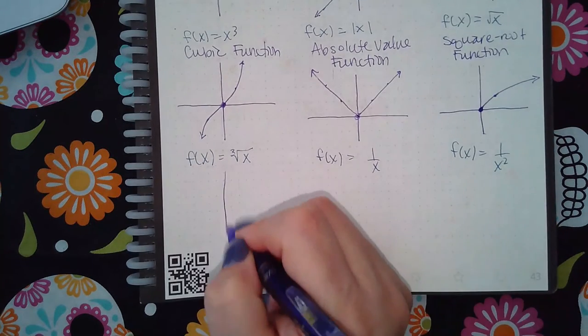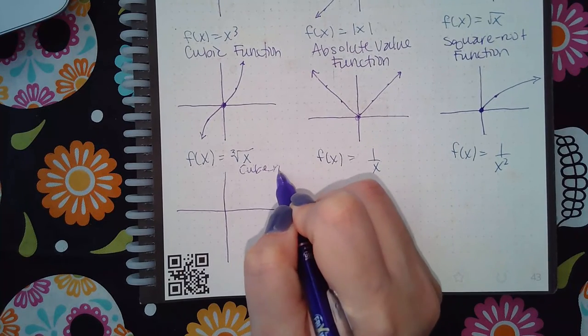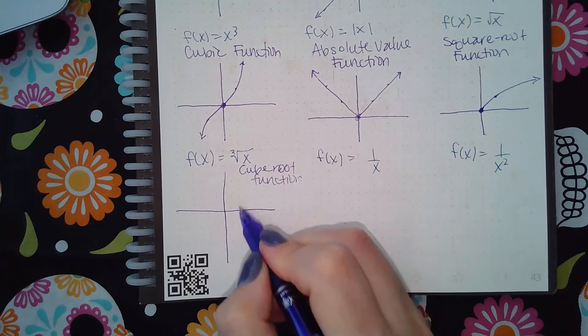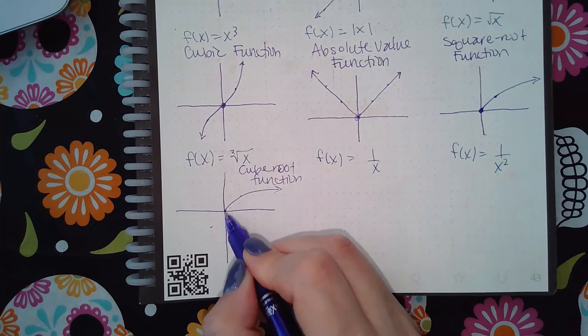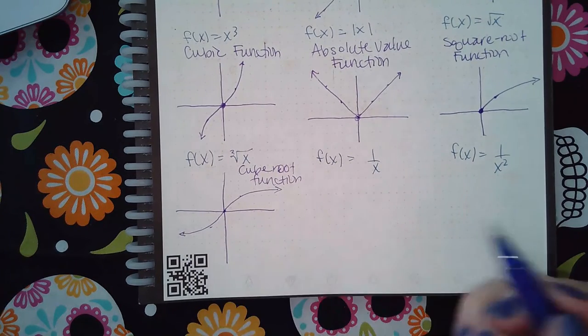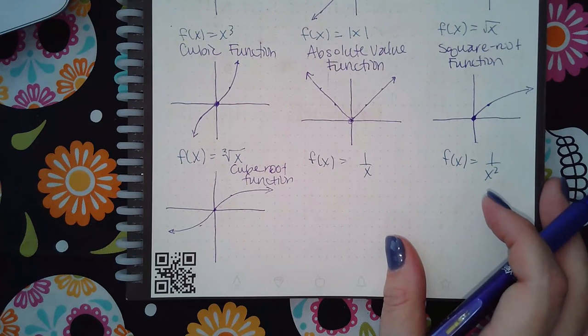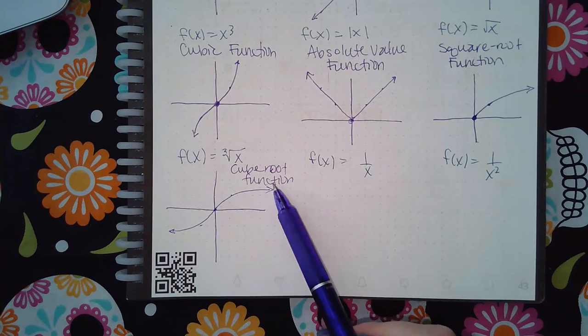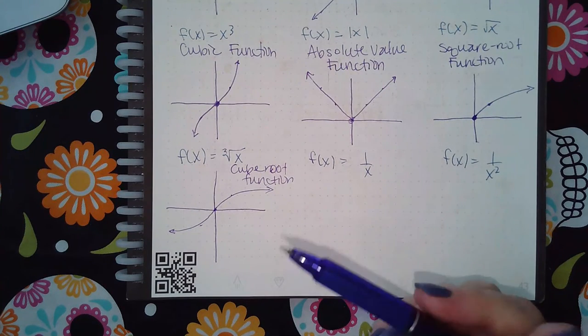So my cube root, this is a cube root function. This one looks like this, and it's also kind of a chair but a little bit different. It's going in different directions. Instead of going up, it's going to the right, and instead of going down it's going to the left.